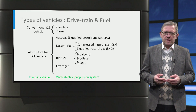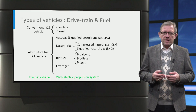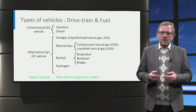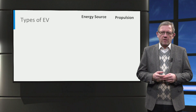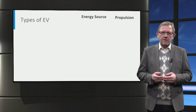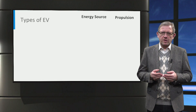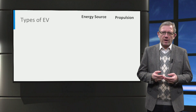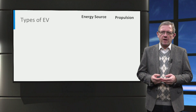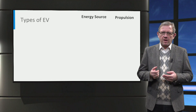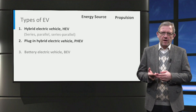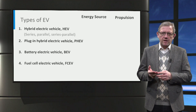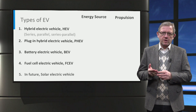In contrast, electric vehicles use an electric drivetrain for propulsion. In this lecture we will focus on electric vehicles. While battery electric vehicles have an electrified drivetrain, they can be classified based on their energy sources, their propulsion devices, and how their propulsion devices are hybridized. In general we have hybrid electric vehicle, plug-in hybrid electric vehicle, battery electric vehicle, fuel cell electric vehicle, and in the future solar electric vehicle.